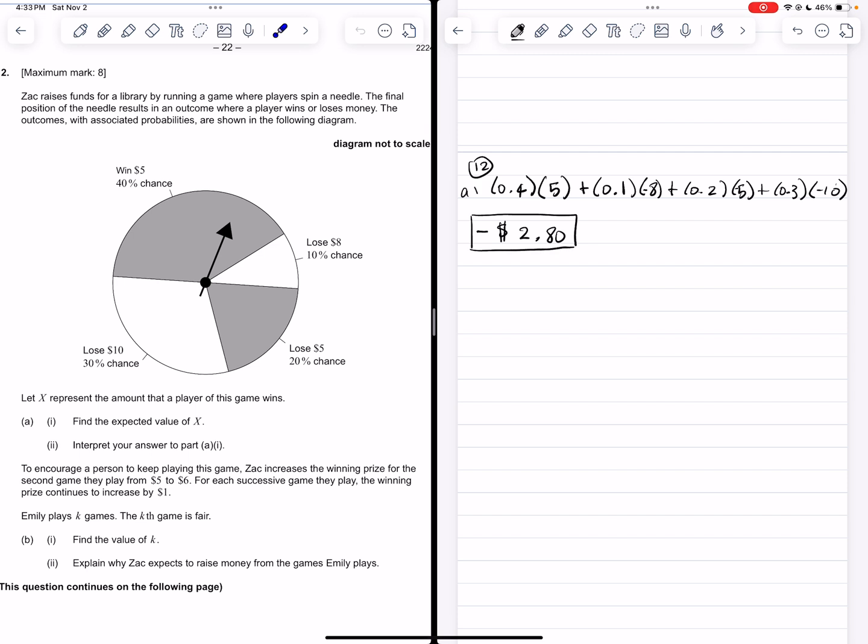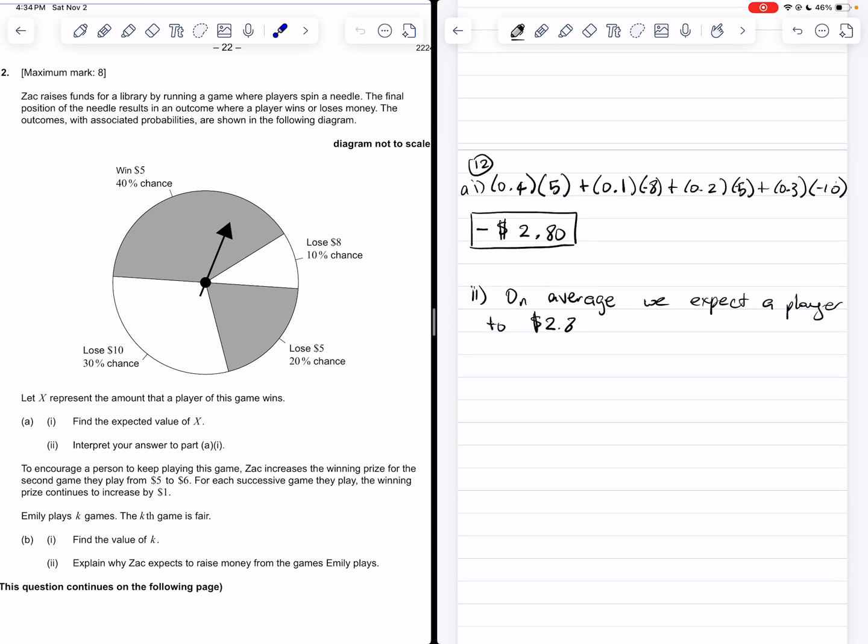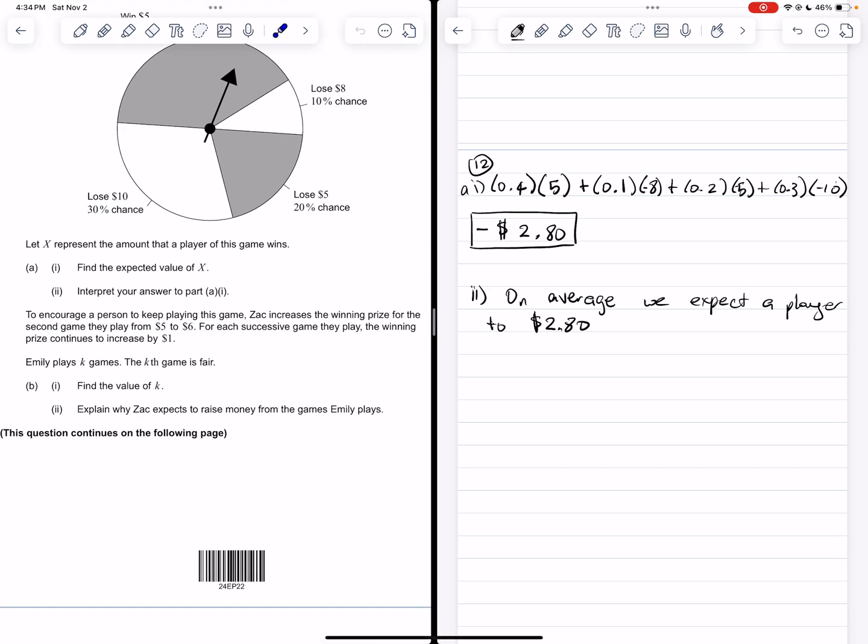And that's the answer for part A1. Then part A2 wants an interpretation of this number. So that negative $2.80 is what we expect anyone who plays this game to win. So the expected amount that we expect someone who plays this game on average to win. Notice that it is a negative amount, and so that means that's the expected amount we expect someone who plays this game on average to lose. So on average, we expect a player to lose $2.80. And it's not guaranteed, this is an expected number, so you do have to use language like on average.